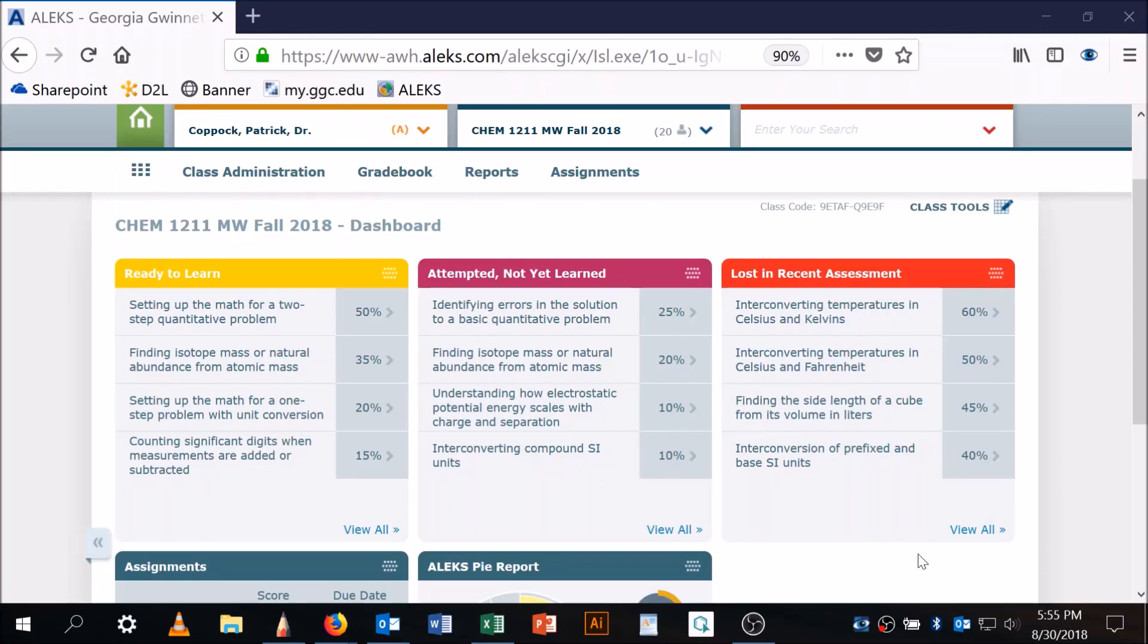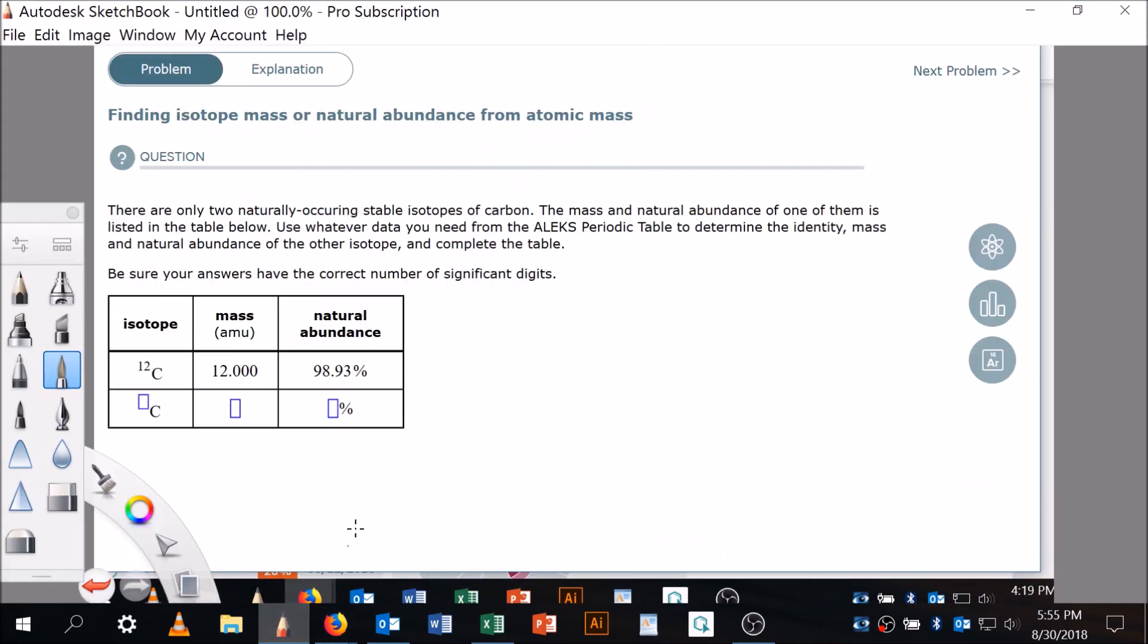Okay, so I'm doing a video here on this second attempted not yet learned problem called Finding Isotope Mass or Natural Abundance from Atomic Mass. I did a couple of these in class yesterday, but I see people are still looking at that and about one-fifth of those that have attempted it have not yet learned it.